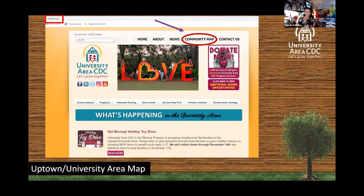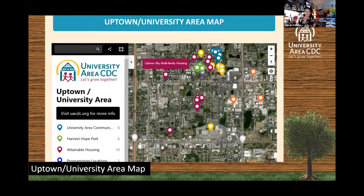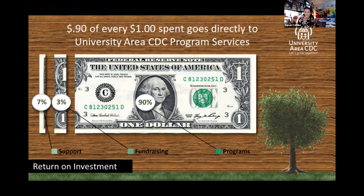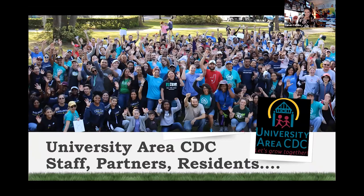If you want to see more about our developments, we've launched an interactive community map on our website at uacdc.org. Go to the top, click on 'Community Map,' and it takes you to an integrated map where you can look at our park, our attainable housing developments, and dig deeper into the work we're doing in the heart of the university area community. It is possible to do all of this work while creating a great ROI — 90 cents of every dollar goes directly back into the community. We self-funded our land banking program at about $1.5 million. We run our organization like a business, and every profit goes directly back into the community.